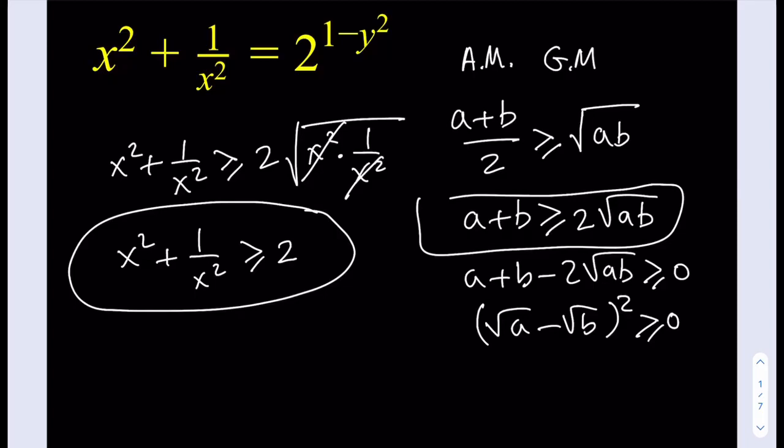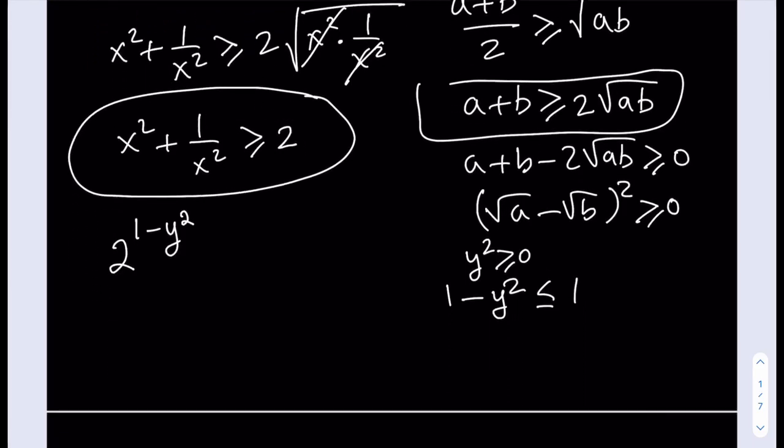Now, what about the right-hand side? Well, if the left-hand side is greater than or equal to 2, that means the right-hand side also needs to be greater than or equal to 2 because they're equal, right? But do we have more information on the right-hand side? Yes, we do, because now this is a different scenario. We have 2 to the power 1 minus y squared. Now, what do we know about this? Well, y squared cannot be negative, right? So y squared is always positive or 0, which means that if you subtract it from 1, the answer can be 1 or less than 1, right?